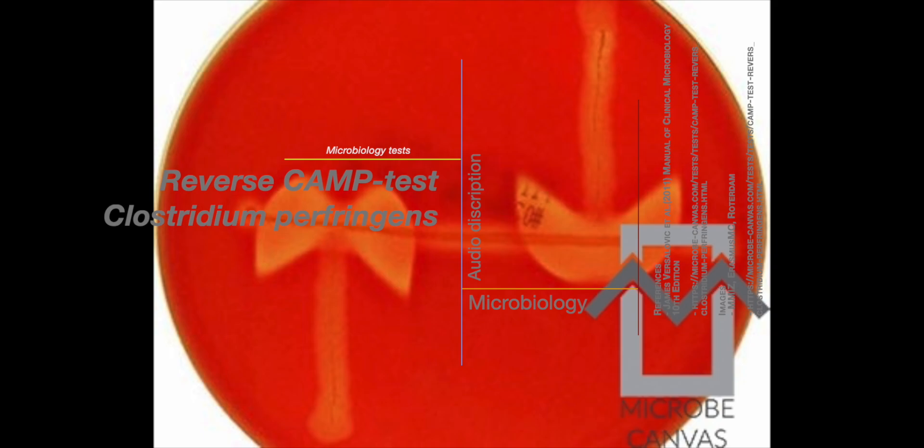The reverse CAMP test is a valuable tool for differentiating Clostridium perfringens from other Clostridium species. This test relies on the synergistic interaction between the alpha toxin produced by C. perfringens and the CAMP factor produced by Streptococcus agalactiae.